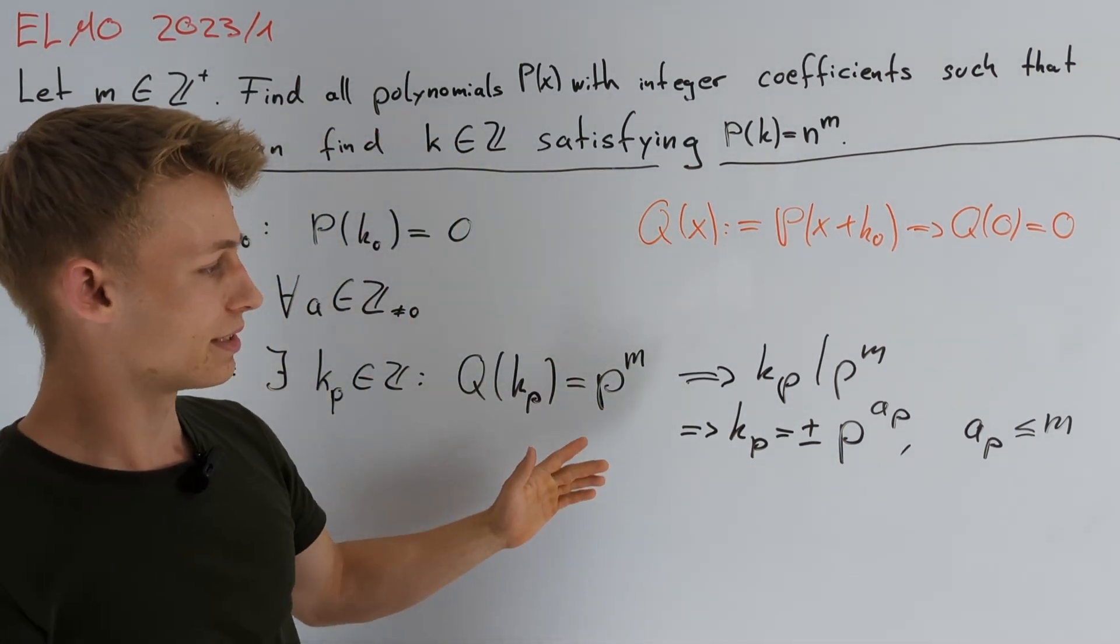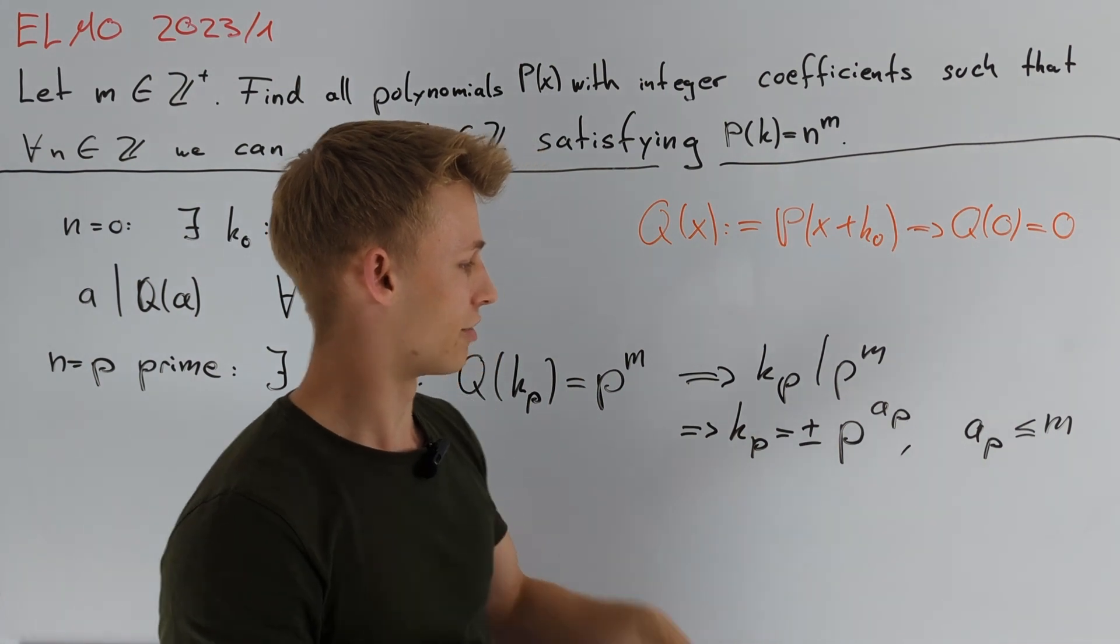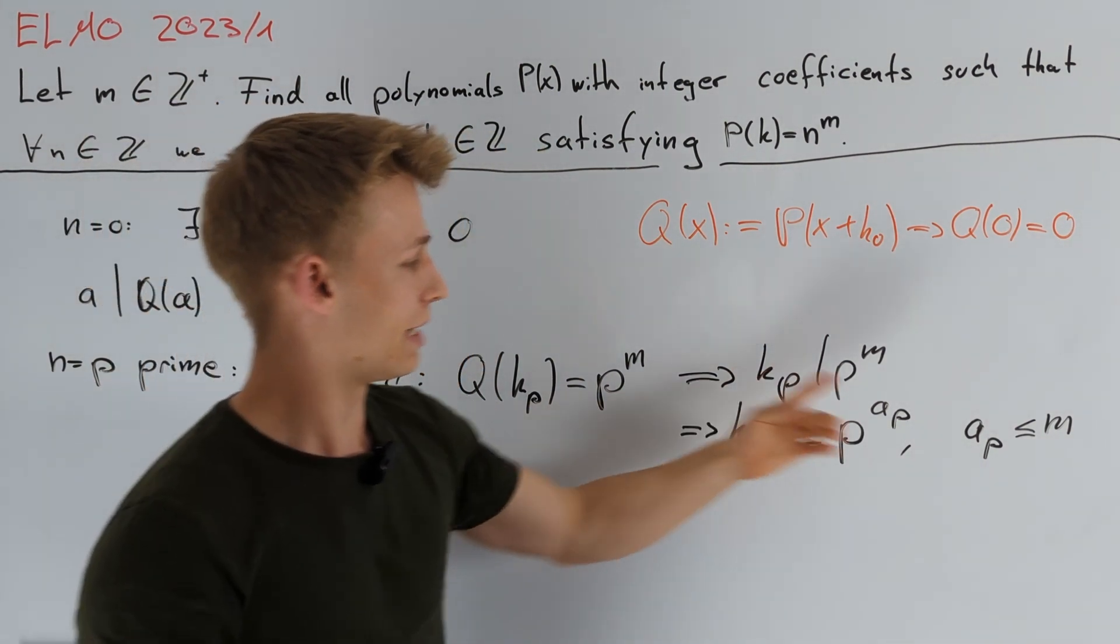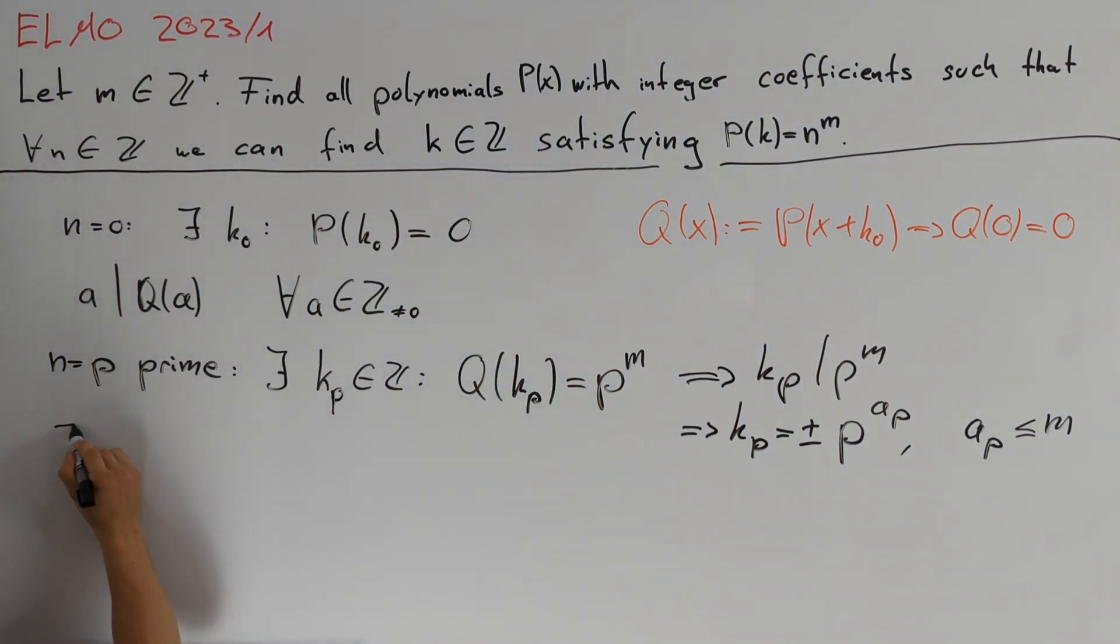We know that there is some integer from zero up to m such that there are infinitely many primes p with aₚ equals to this integer.